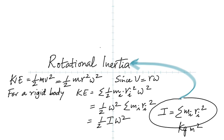In linear motion, if the mass is bigger, the inertia is bigger. In rotational motion, if the rotational inertia is bigger, then the inertia is bigger. In whatever role mass plays in linear motion, the same part is played by rotational inertia in rotational motion.